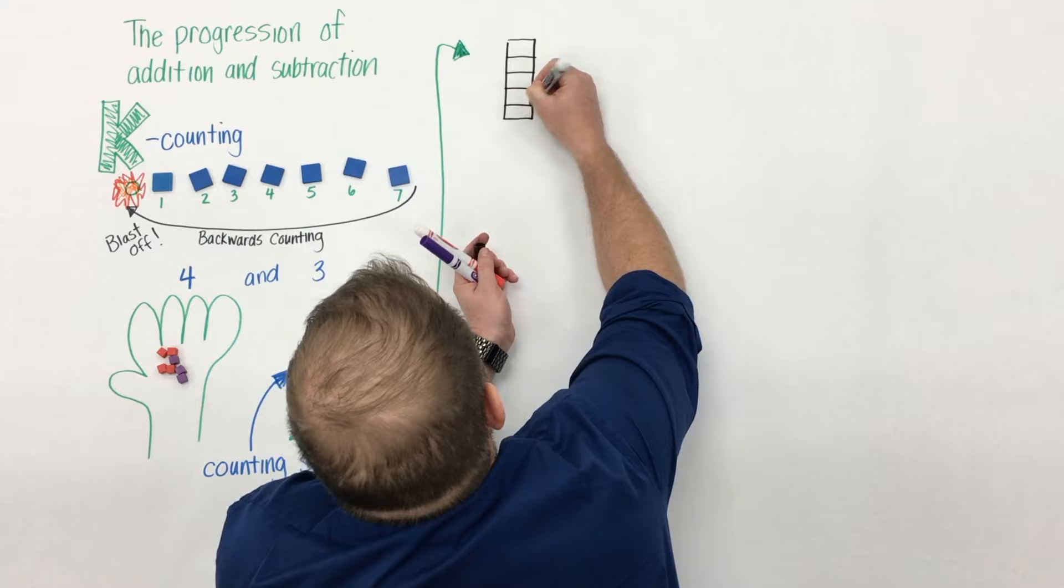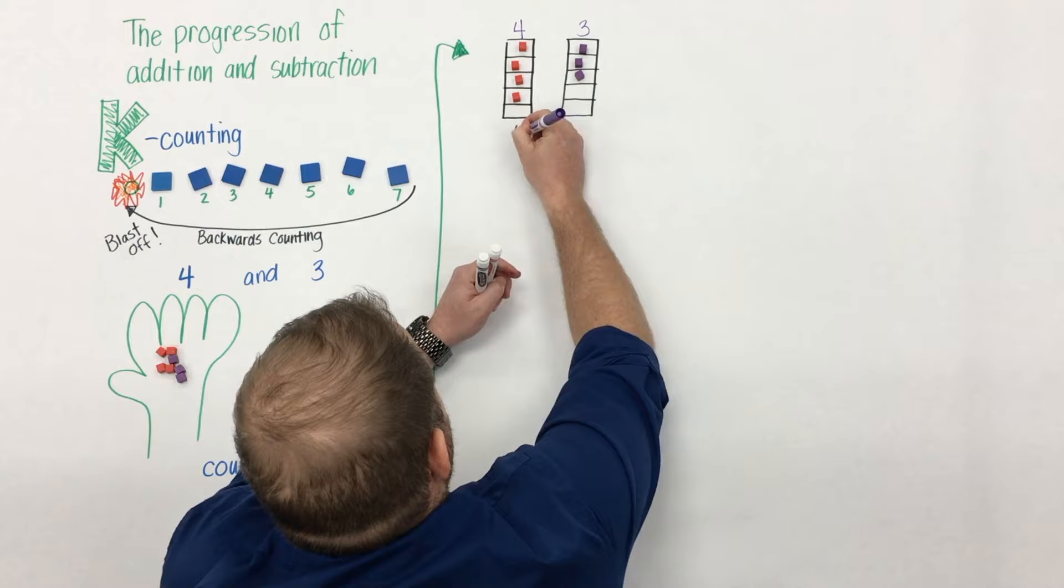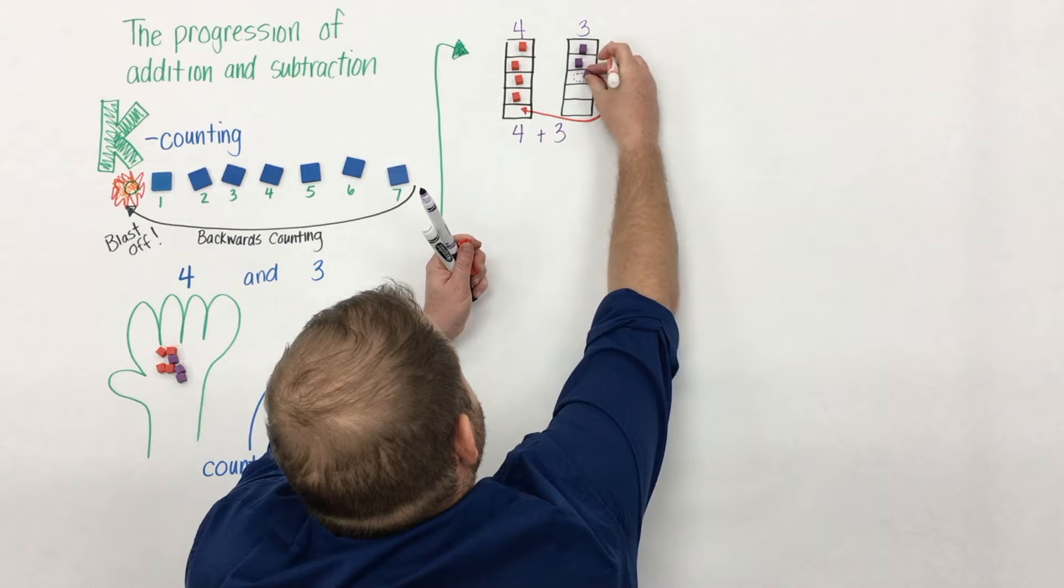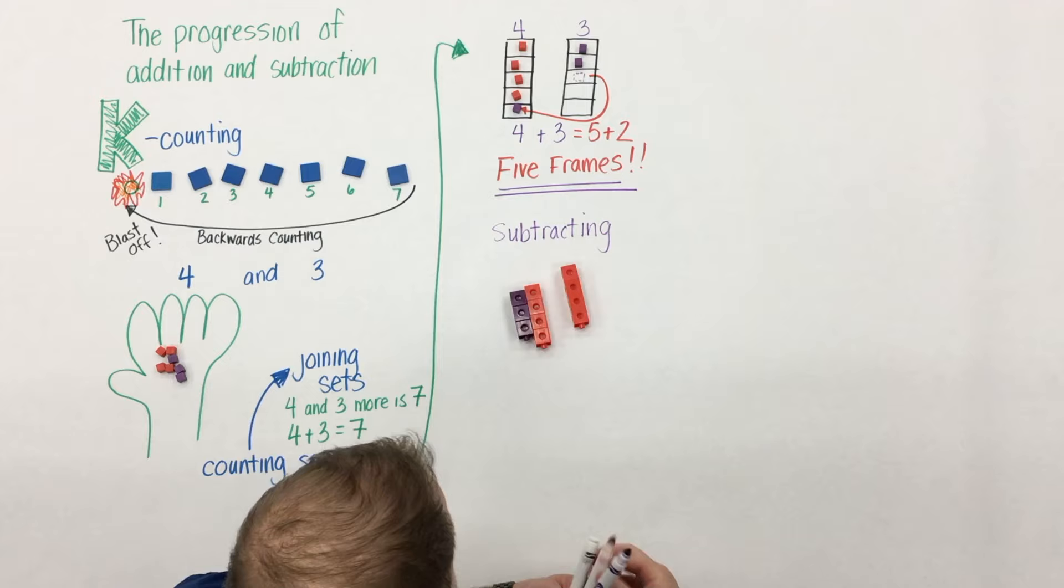As students begin to work on this idea of joining sets we introduce five frames and to be honest I don't know if they get enough play in the early grades. So we'll have four and three and students begin to build an understanding of five frames and filling up a five frame. Students can see that four plus three is the same as five plus two and this understanding will build with students when they begin to use ten frames later on.